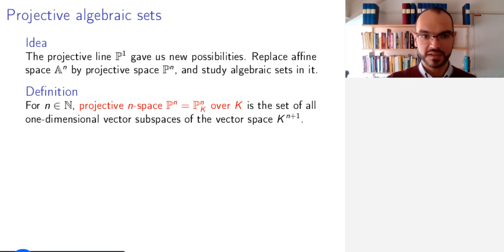Projective n-space P^n is defined as the set of all one-dimensional vector subspaces of the vector space K^{n+1}.